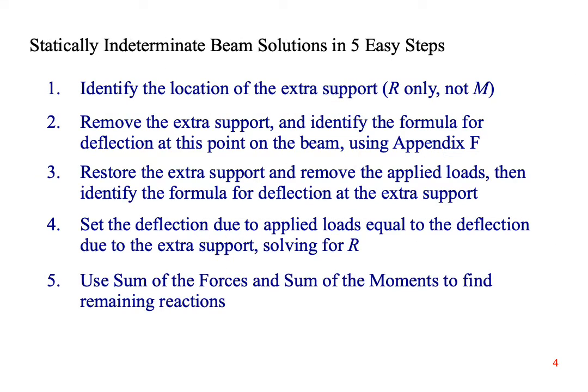Here are the five steps we need to follow to solve statically indeterminate beam problems. First, we have to identify the location of the extra support. This is a place where the actual deflection is zero, because the beam is sitting on a support. The rest of the beam may be deflecting upwards or downwards, but at this particular point, deflection is zero.